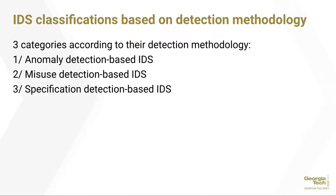The second classification, based on detection methodology, can be broken down into three categories: first, anomaly detection-based IDS; second, misuse detection-based IDS; and third, specification detection-based IDS.